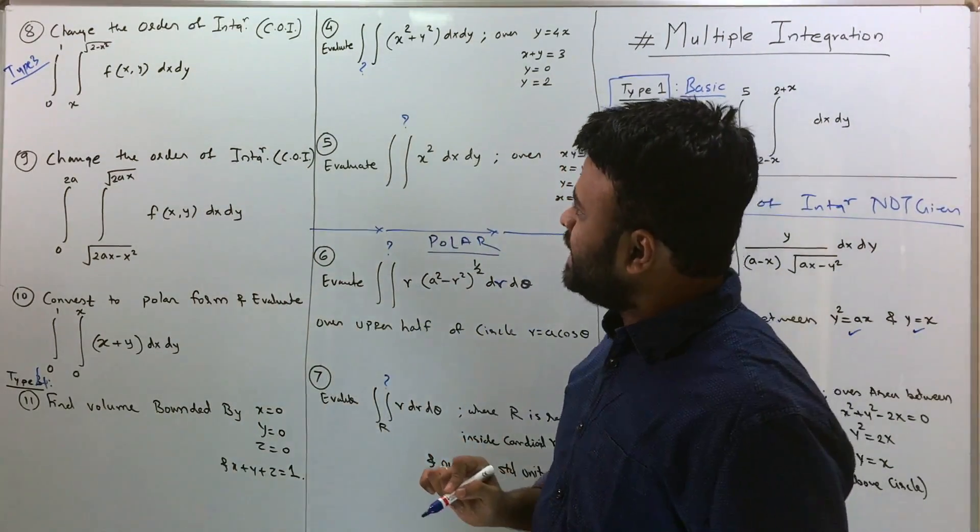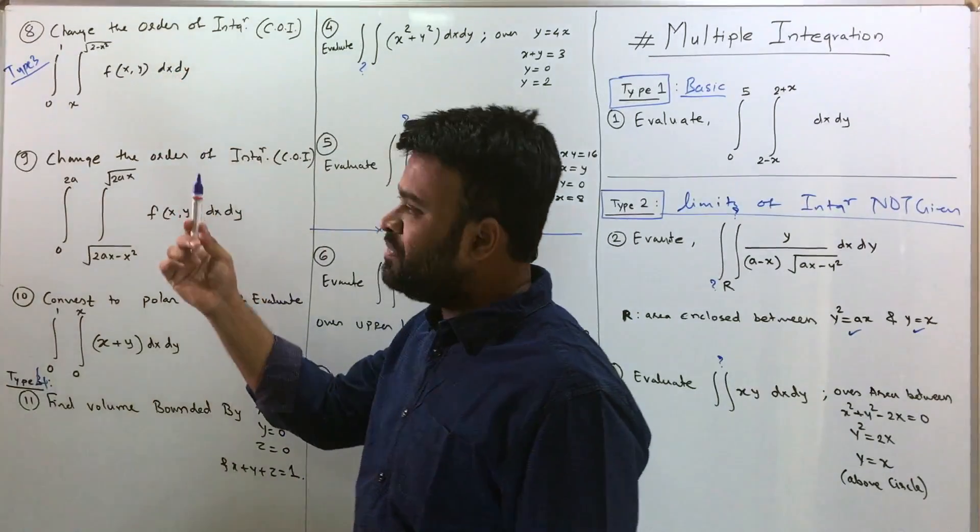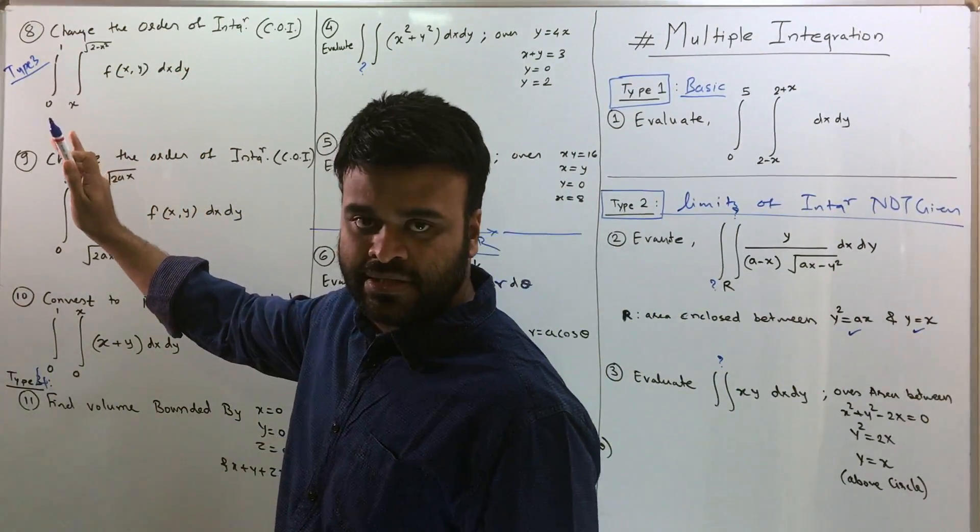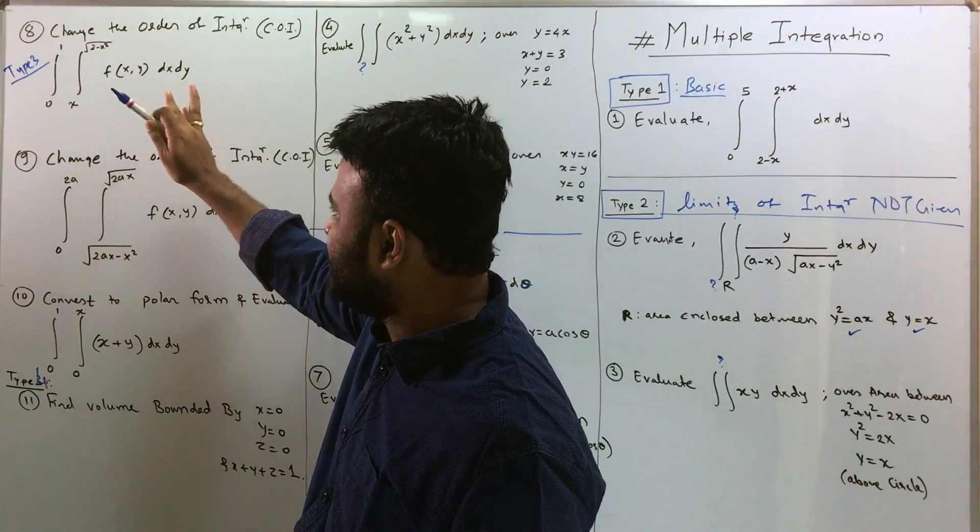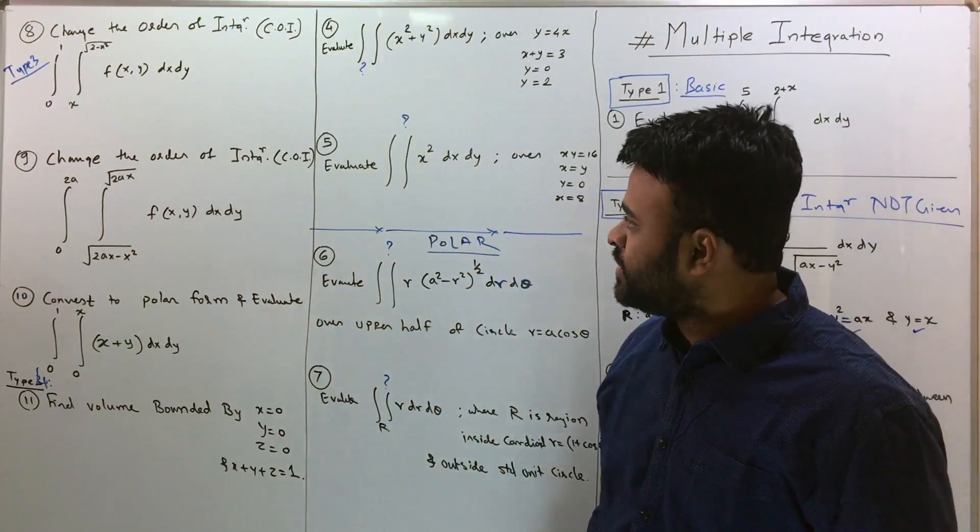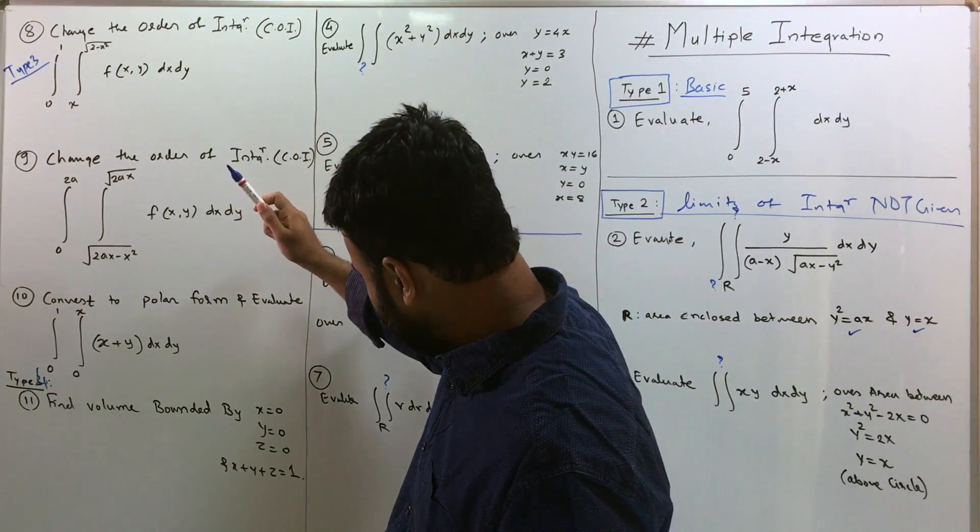So let's maybe call this type 3 and let's call this type 4. Now see what type 3 is. Well, type 3 says change the order of integration. Now what do you mean by that is, you just have to flip the integrals like dx dy will become dy dx. So just flip the order. So that's going to be type 3 and that's how question number 8 and 9 is going to be.